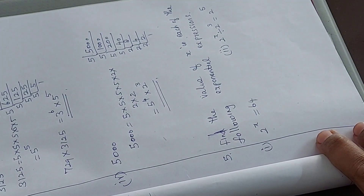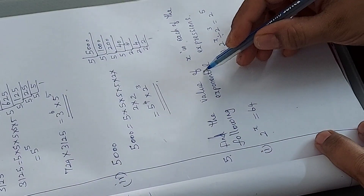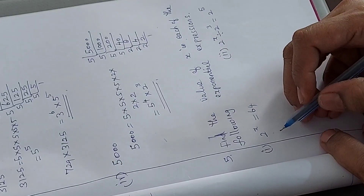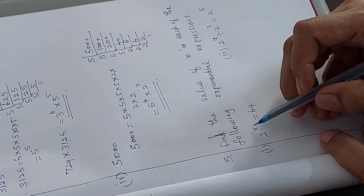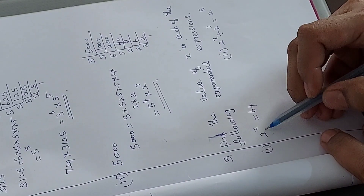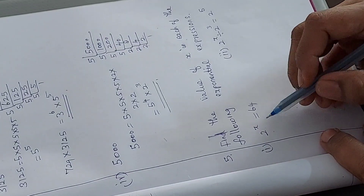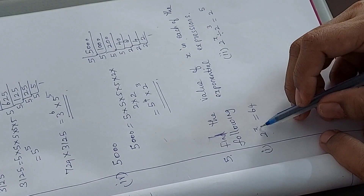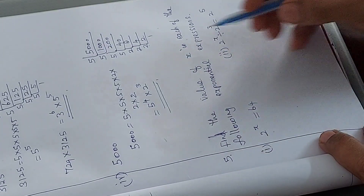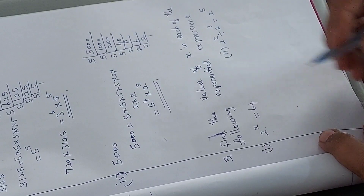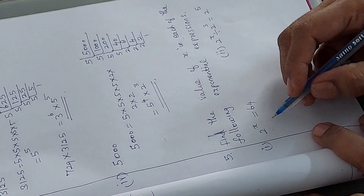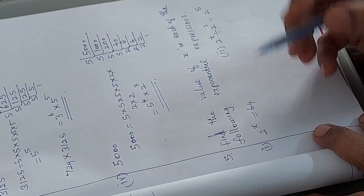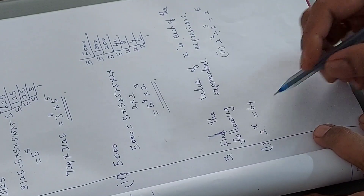Now we will see the fifth problem: find the value of x in each of the following exponential expressions. An exponential expression is one given with a base number and a power. Here, 2 to the power x is the exponential expression. The first problem is 2 power x equals 64, where x is given in the power position.